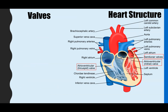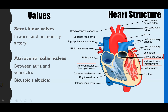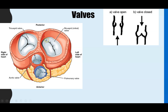Next, we'll look at the valves. There are two key sets of valves within the heart. We have the semilunar valves, found in the aorta and the pulmonary arteries — so between the ventricles and the arteries. We have the atrioventricular valves; the name is a hint — they're found between the atrium and the ventricles. Sometimes they're given specific names: the bicuspid (or mitral) valve on the left and the tricuspid valve on the right, describing the number of flaps — two flaps for bicuspid and three for tricuspid.